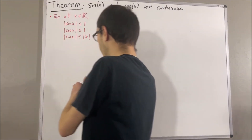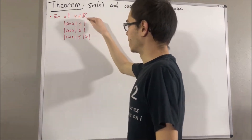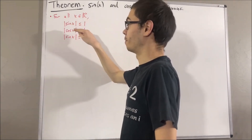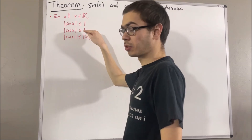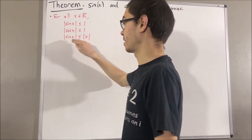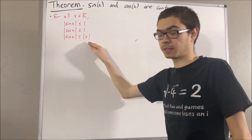We have proven, for all real numbers x: the absolute value of sine x is less than or equal to 1, the absolute value of cosine x is less than or equal to 1, and the absolute value of sine x is less than or equal to the absolute value of x.